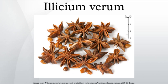Star anise is an ingredient of the traditional five-spice powder of Chinese cooking. It is also a major ingredient in the making of pho, a Vietnamese noodle soup. It is also used in the French recipe of mulled wine called vin chaud.